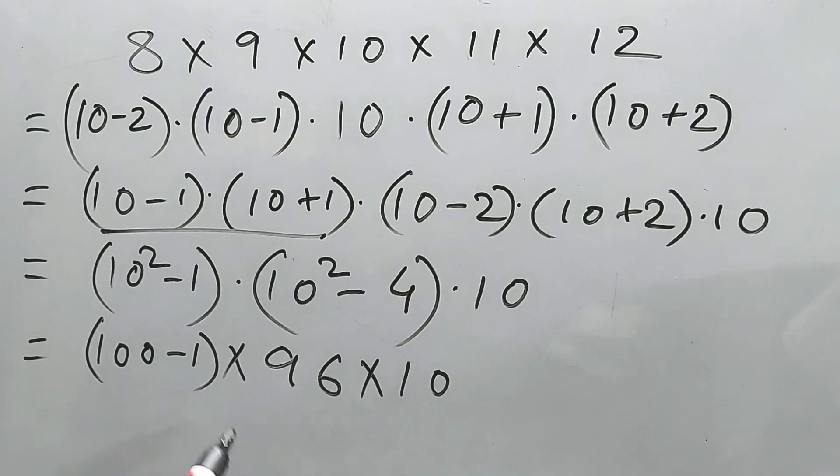So 9600 minus 96 is 9504 into 10 is one more zero. That means 95040. This is your answer. You like it? And it's bonus time.